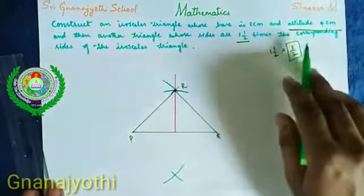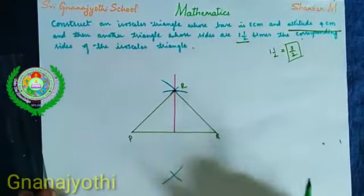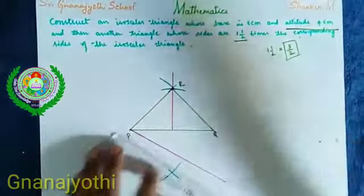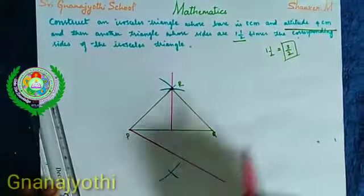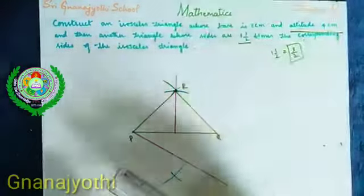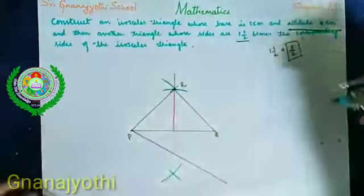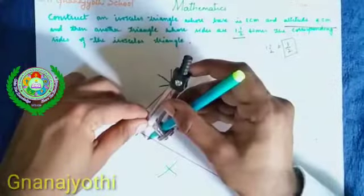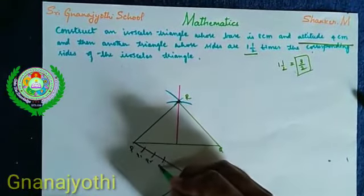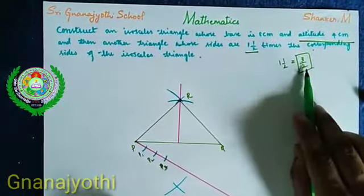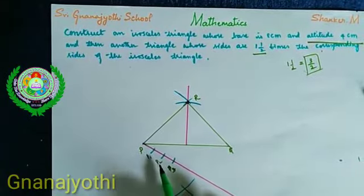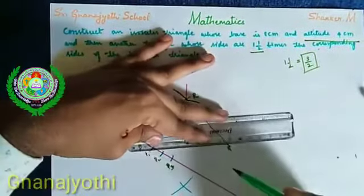Now we need to construct another corresponding similar triangle. Draw an acute angle. The ratio is 3/2, which means we need to divide this line into 3 units. Take the compass, take 1 unit and cut this line for 3 units: 1, 2, 3. Name these points P1, P2, P3. Observe the denominator — the denominator is 2. We always join the denominator only. Therefore, join P2 to Q.